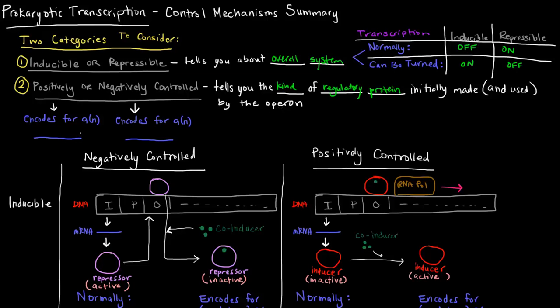If something is positively controlled, it encodes for an inducer protein. If something is negatively controlled, it encodes for a repressor protein. We haven't talked about inducer proteins yet, but we have talked about repressor proteins. Now let's look at the chart and try to figure things out.